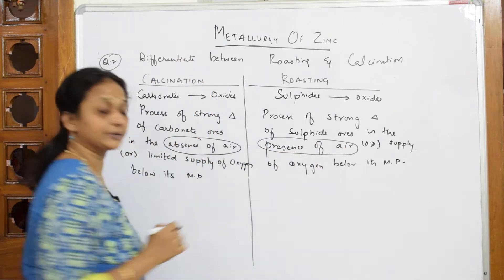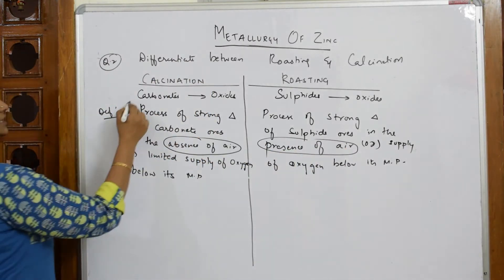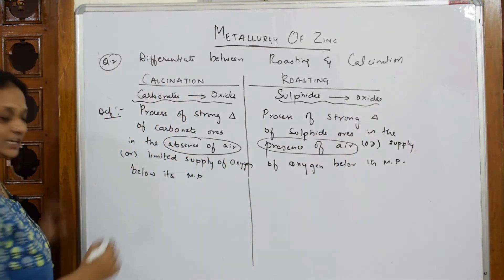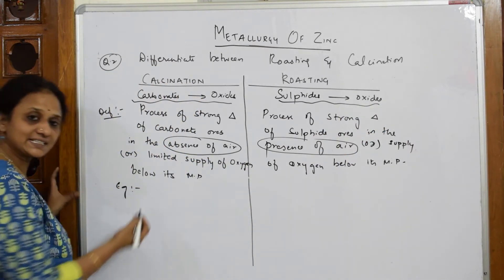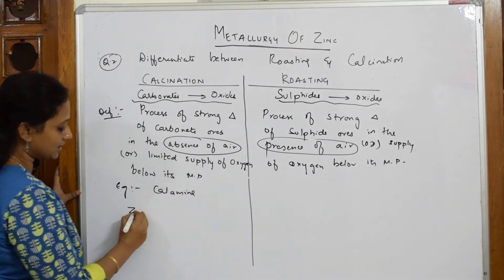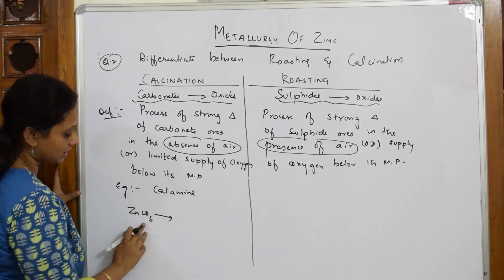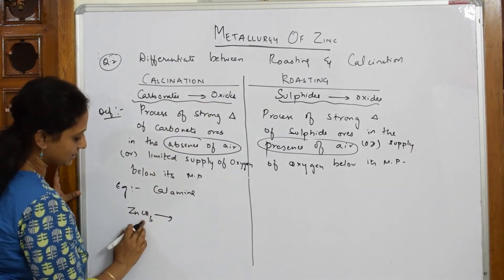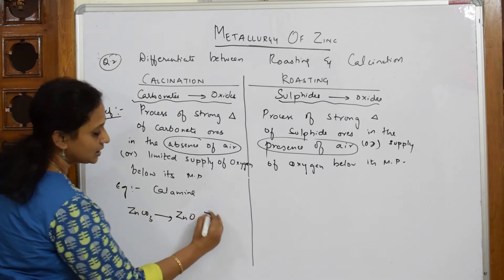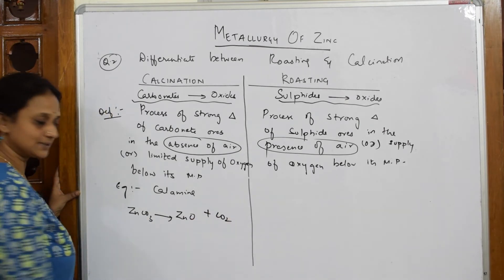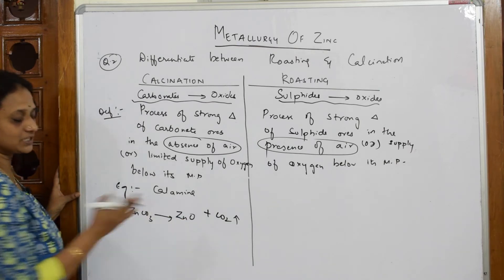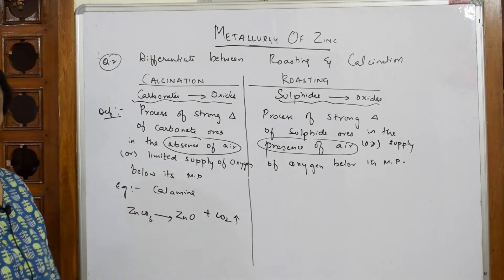Carbonates are converted to oxides, and sulfides are converted to oxides. Let us take the carbonate ore of zinc — that is calamine, which is zinc carbonate (ZnCO₃). In calcination, we break the carbonate into zinc oxide (ZnO) and carbon dioxide (CO₂). Balancing: Zn is 1, C is 1, O is 2+1=3 and 1+2=3. Balanced. This is your calcination reaction.